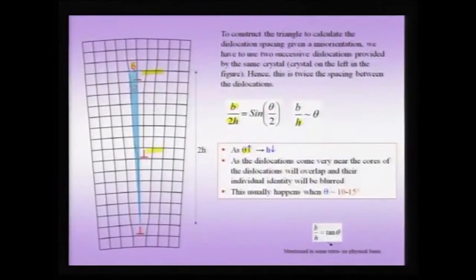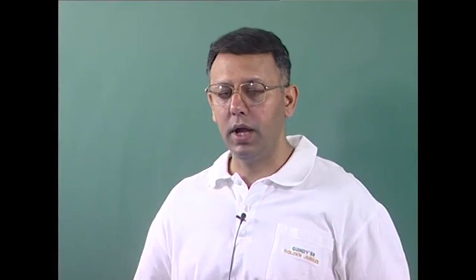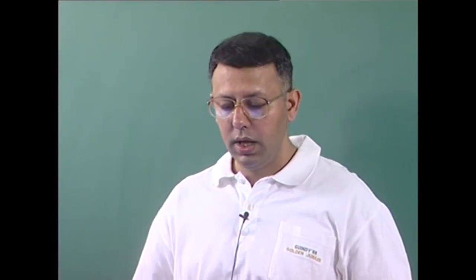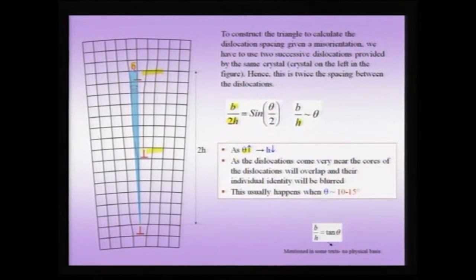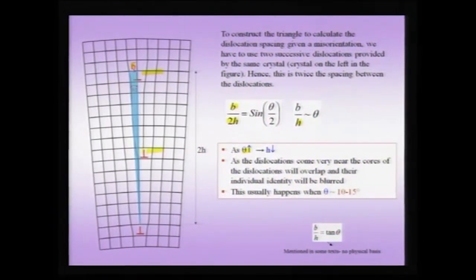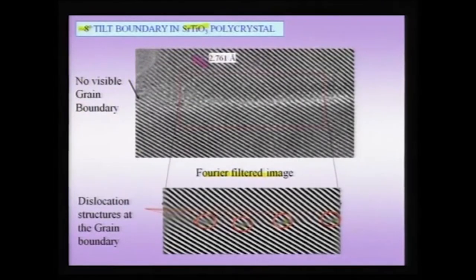An important feature of these dislocations along low angle grain boundaries — and especially why this arrangement forms during polygonization — is that the compressive field of one dislocation partially cancels the tensile field of another. Therefore, such a boundary has no long-range stress fields; all the stress field is localized only to the grain boundary region, unlike an isolated dislocation. This is the motivation for a crystal to throw out such low angle grain boundaries during a polygonization process.